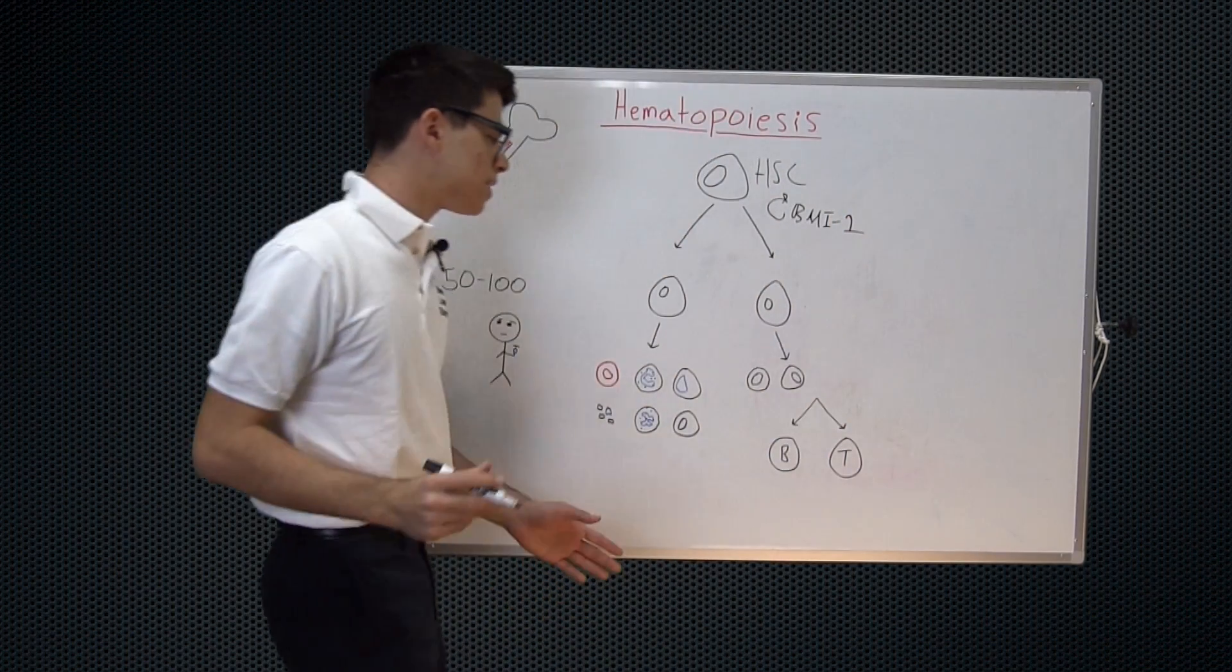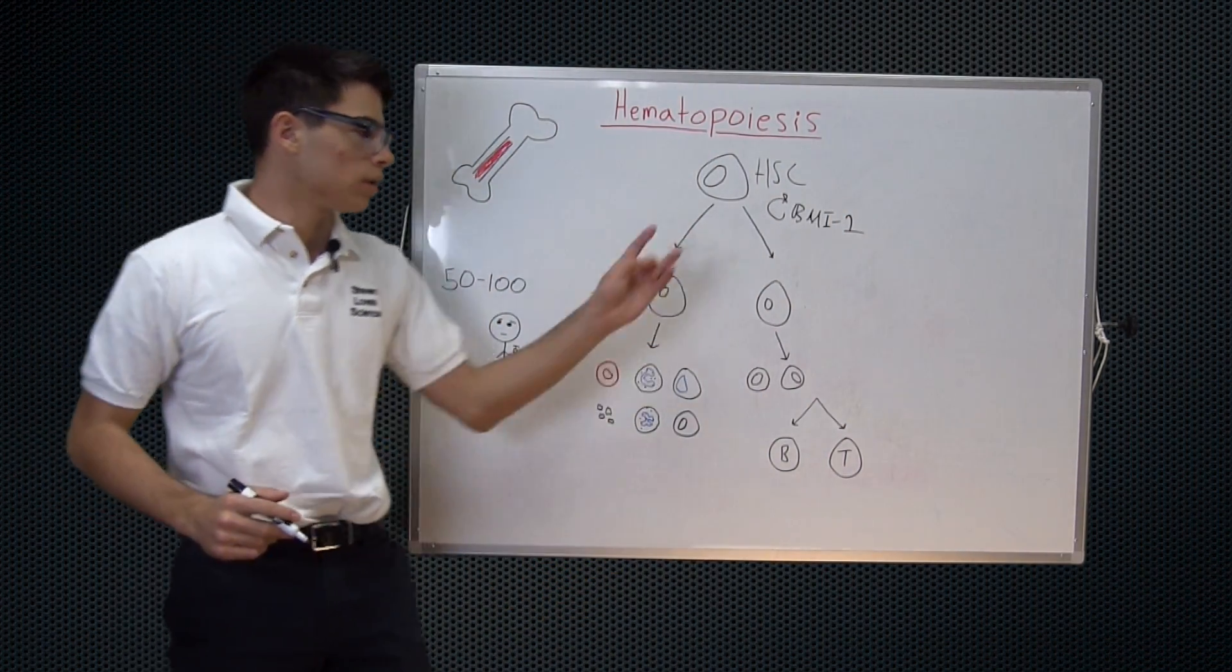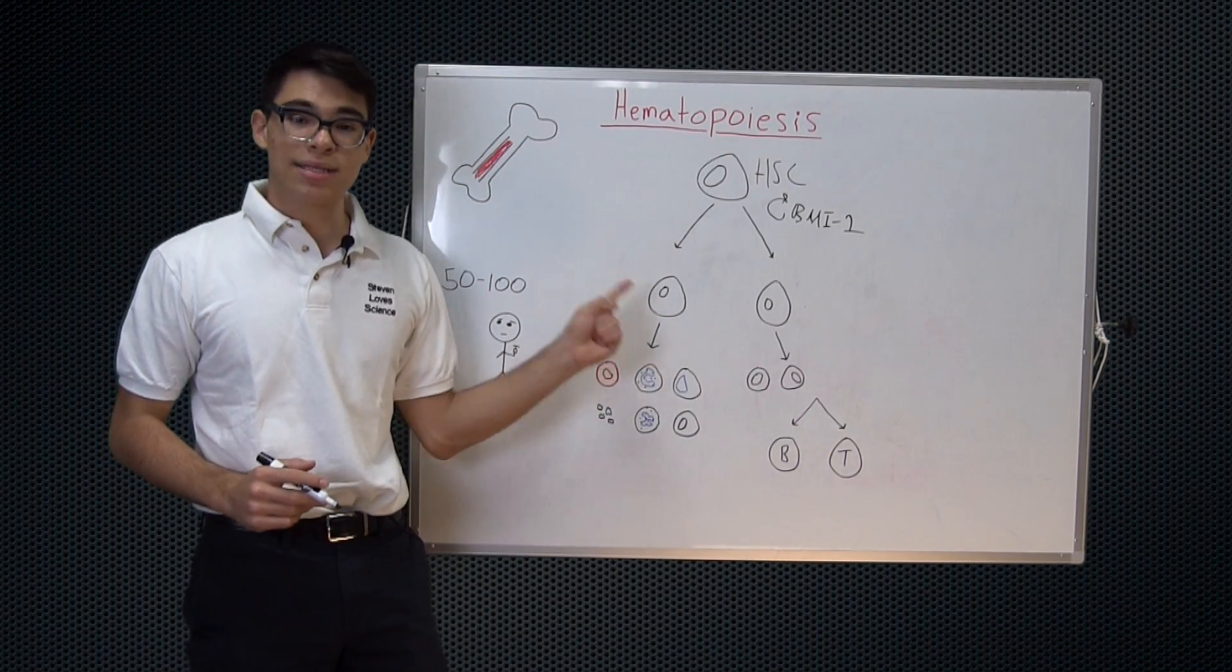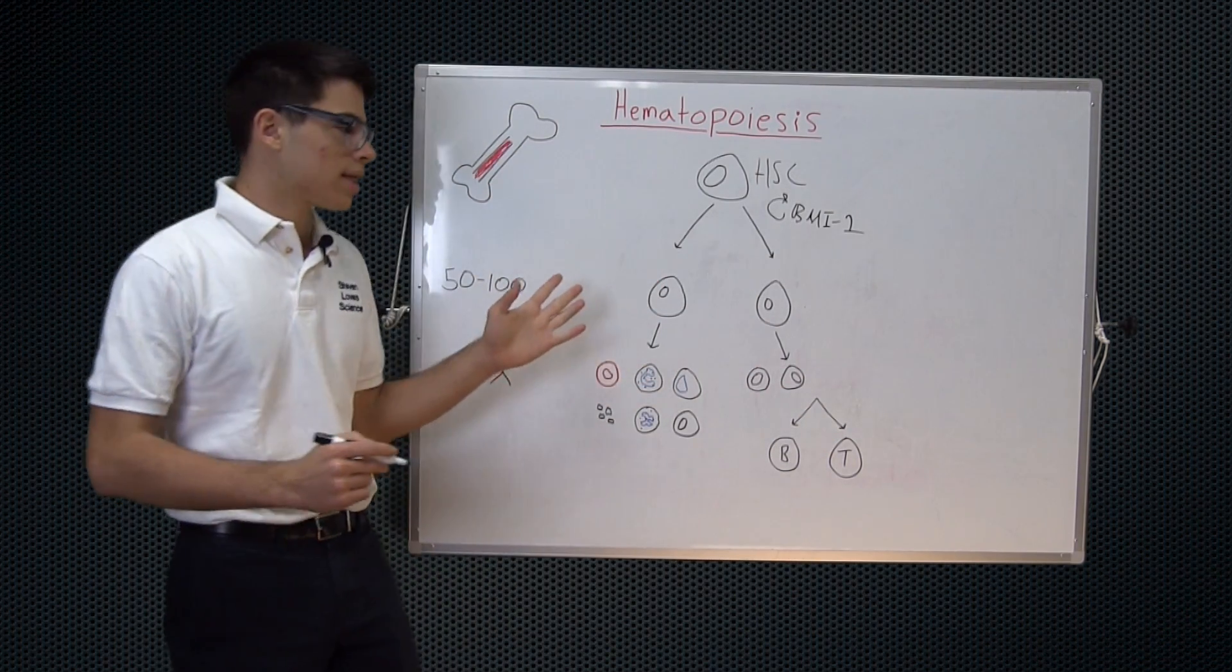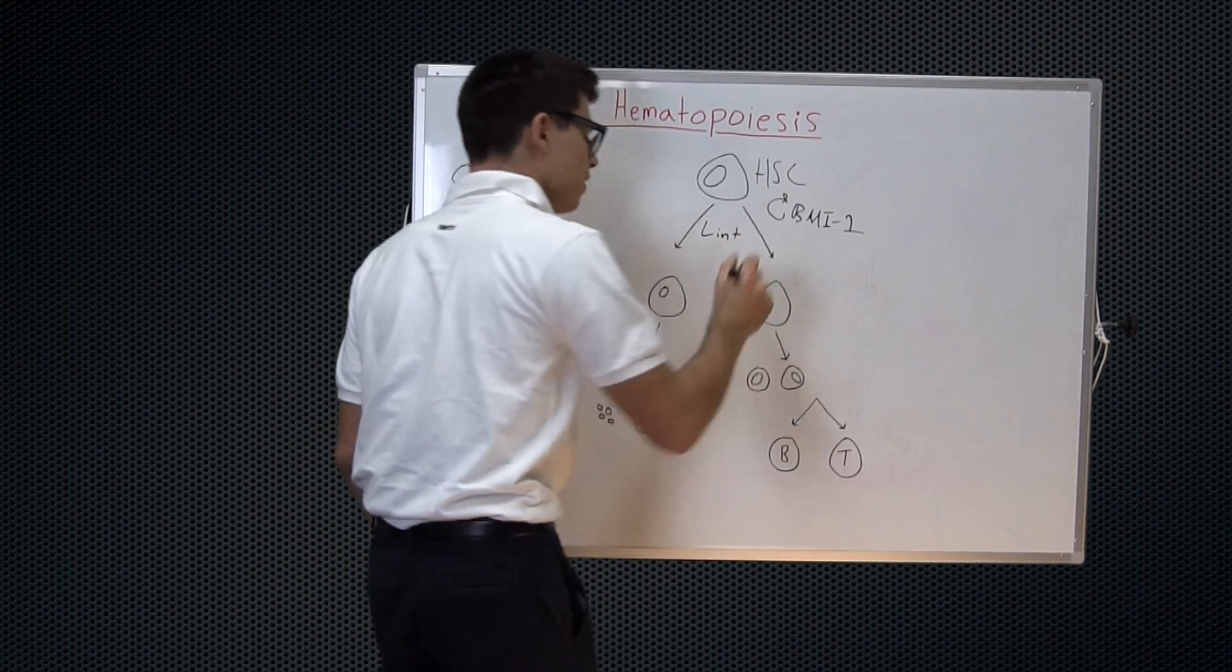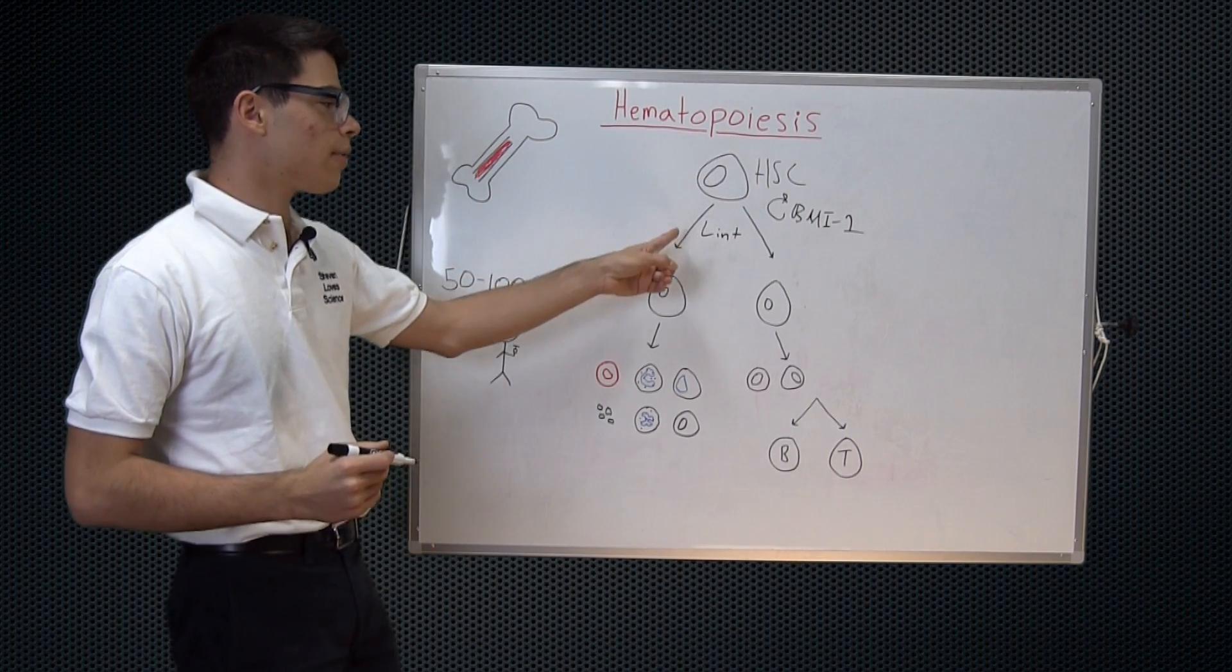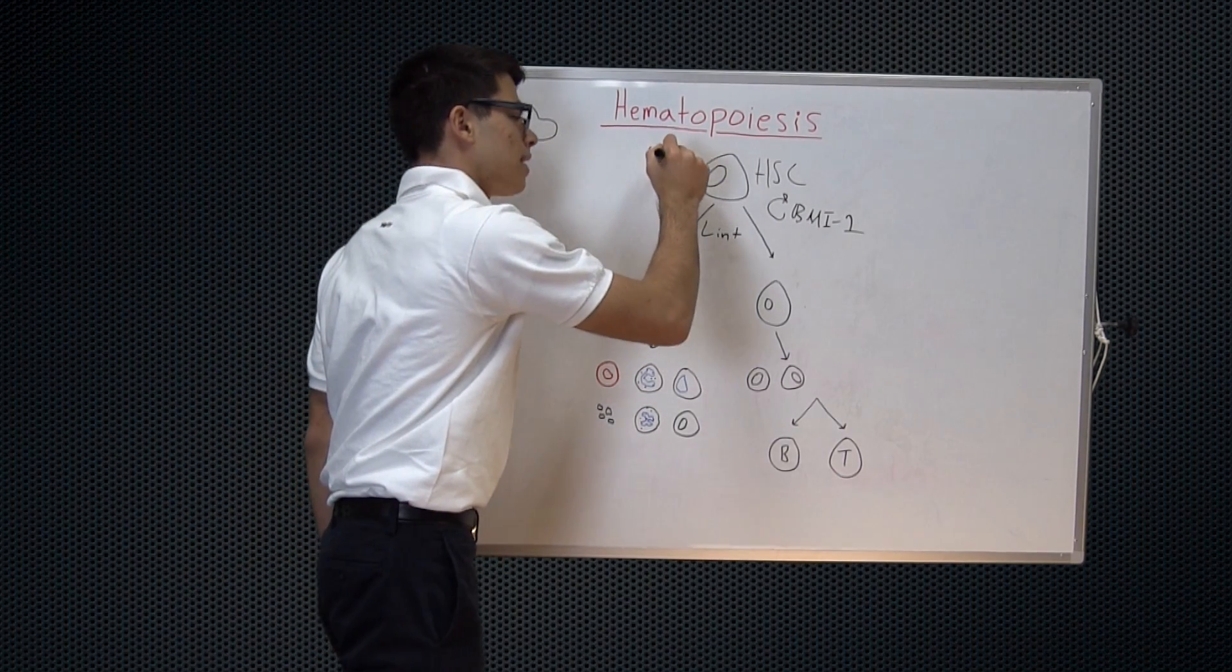Or it can make the decision to then either become a myeloid cell or a lymphoid cell. Once it makes the decision to become a myeloid or lymphoid cell, we can see that it is LIN-positive, meaning lineage positive. It will select the lineage. This is versus the hematopoietic stem cell up here which has not made the decision, which is LIN-negative.